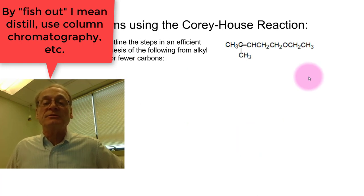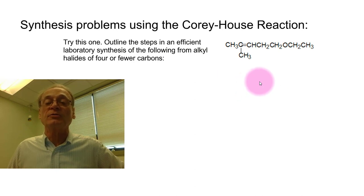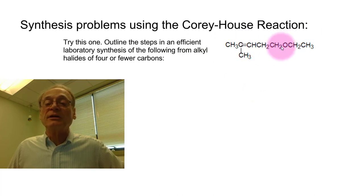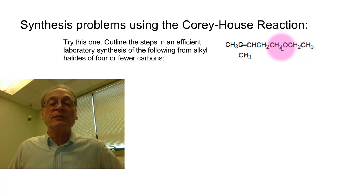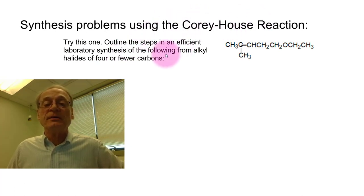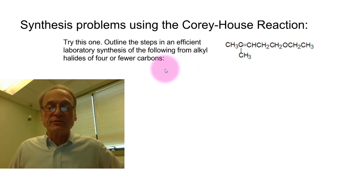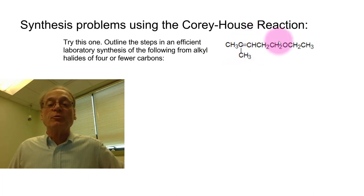Let's do one more synthesis example for you to work on yourself. Make this compound, which is more complicated — it has a double bond and an ether functionality: five carbons in a row with an ethoxy group on one carbon, a double bond, and an additional methyl group. Using a Corey-House reaction and starting from alkyl halides, analyze which pieces to join, decide which is the alkyl halide and which is the Gilman reagent, show how to put them together, and show how to make the Gilman reagent from an alkyl halide.